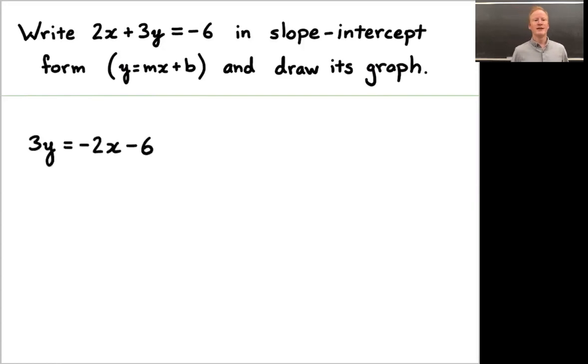Welcome back. I took the equation at the top of the screen and subtracted 2x, then divided by 3. And notice the 6 thirds is the same thing as 2. So y equals minus 2 thirds x minus 2. That is this equation in slope-intercept form. So that's the first half of the solution. The second half is to draw its graph.